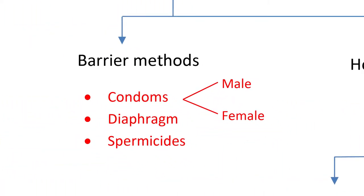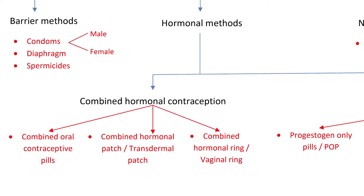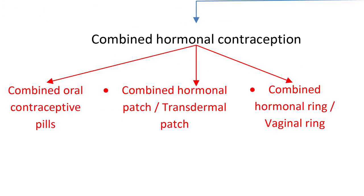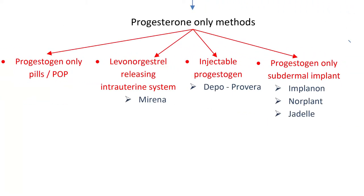Barrier methods include male and female condoms, diaphragm, and spermicides. Hormonal methods are classified into combined hormonal contraception and progesterone-only methods. Combined hormonal contraception includes combined oral contraceptive pills, combined hormonal patch or transdermal patch, and combined hormonal ring or vaginal ring. Progesterone-only methods include progesterone-only pills, levonorgestrel-releasing intrauterine system, injectable progesterone, and progesterone-only subdermal implants.